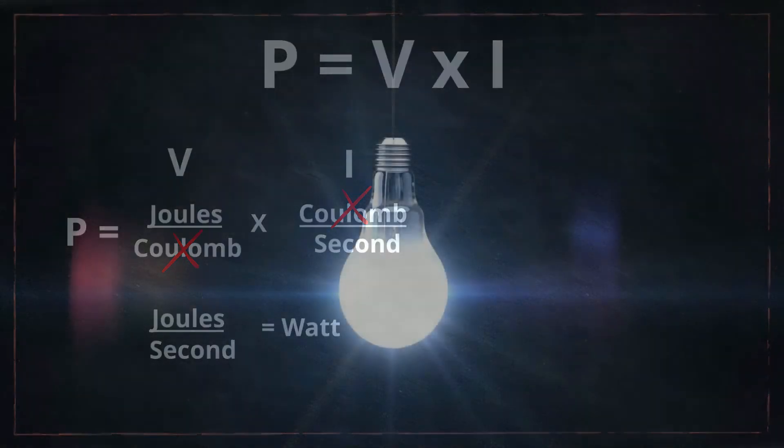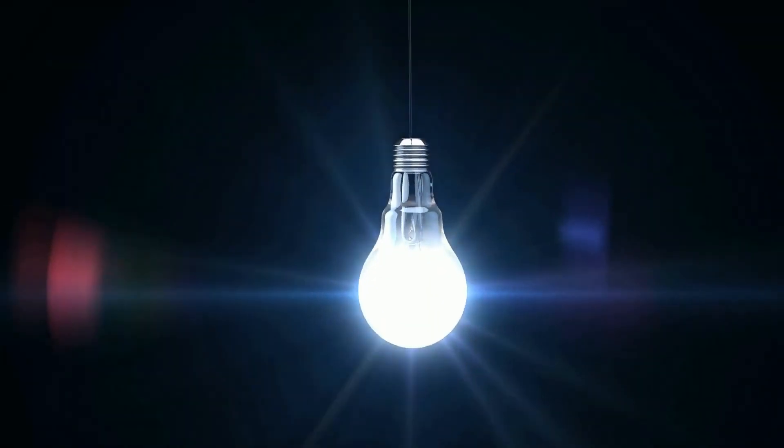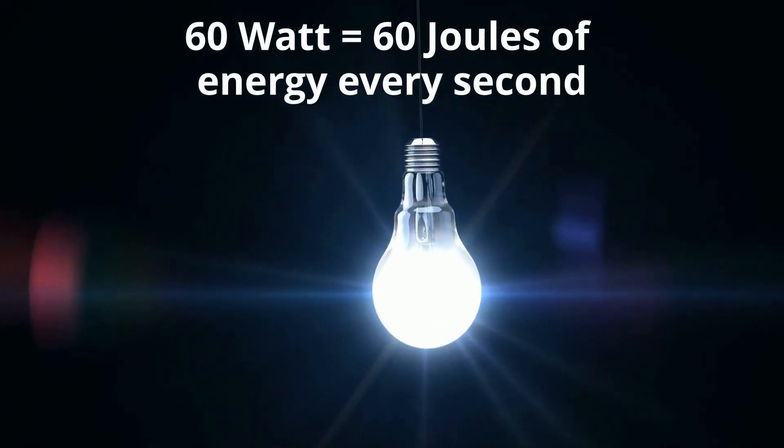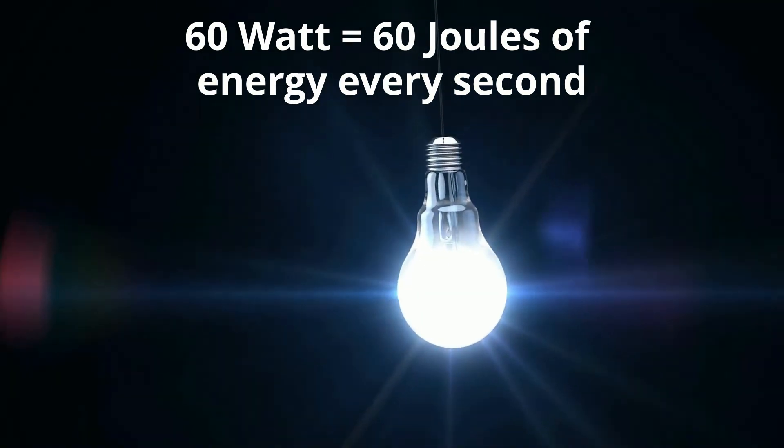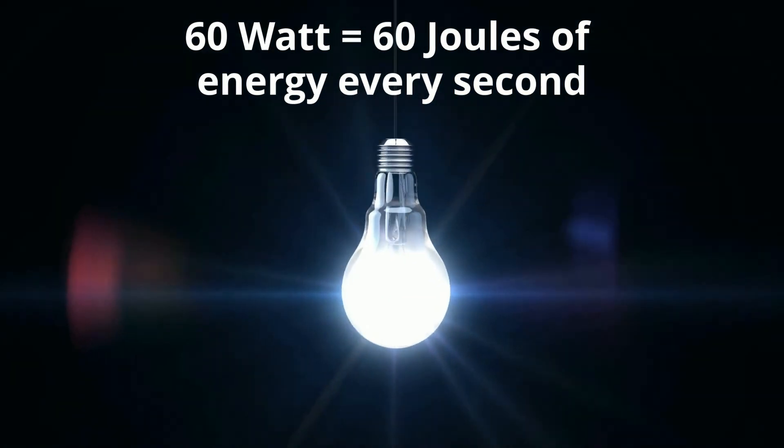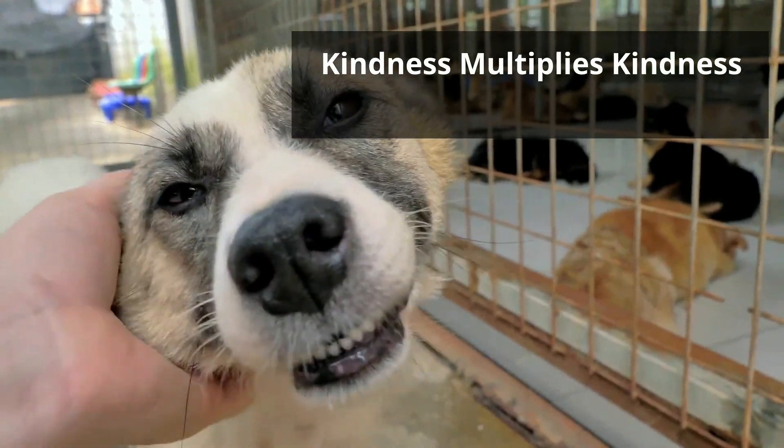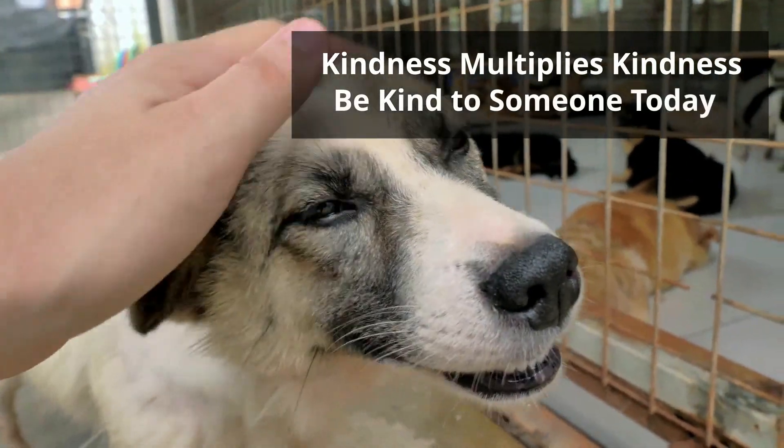So let's go back to the 60 watt bulb. A 60 watt bulb uses 60 joules of energy each second that it is on. Thanks for watching and remember, kindness multiplies kindness, be kind to someone today.